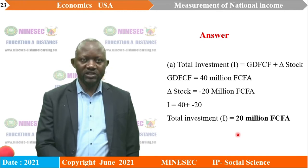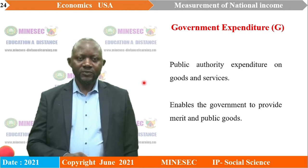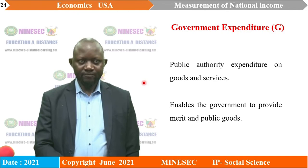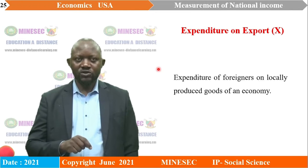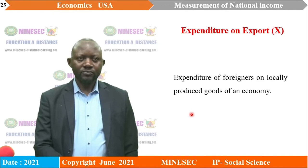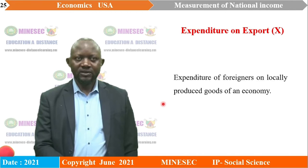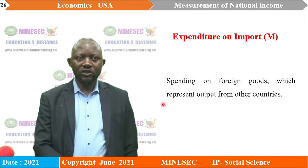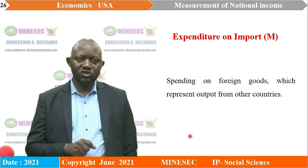Government expenditure represents public authority expenditure on final goods and services, enabling the government to provide merit and public goods. Expenditure on exports refers to the expenditure of foreigners on locally produced goods of an economy — it is added when calculating national income as it forms part of the country's output. Expenditure on imports is the spending on foreign goods, representing output from other countries — it is subtracted when calculating national income.